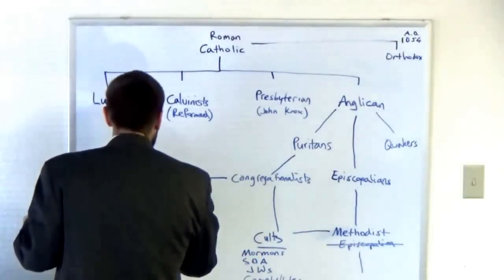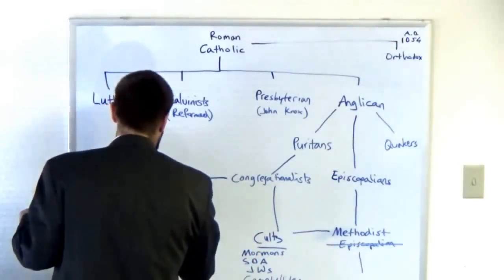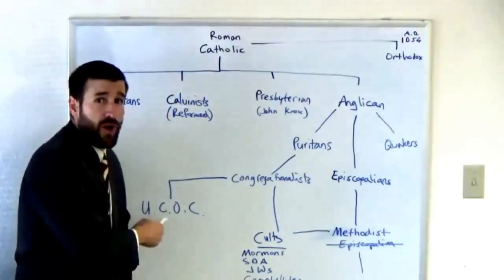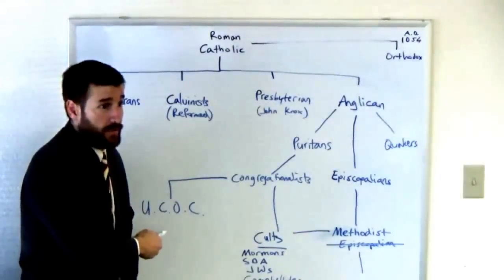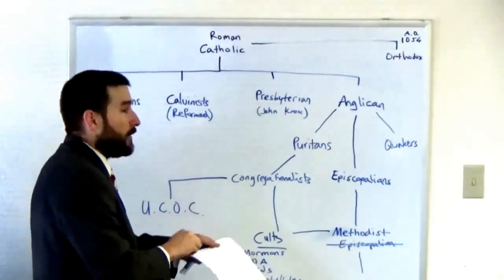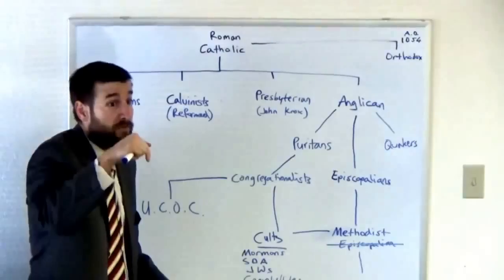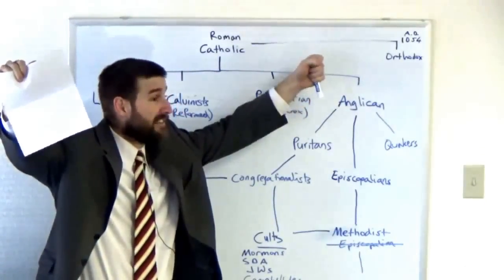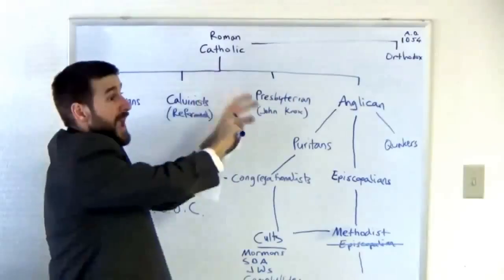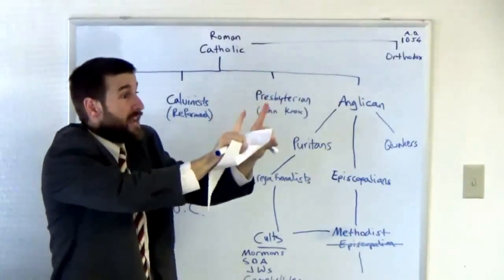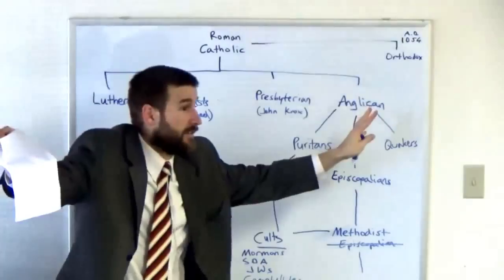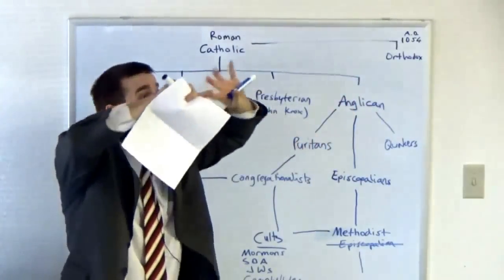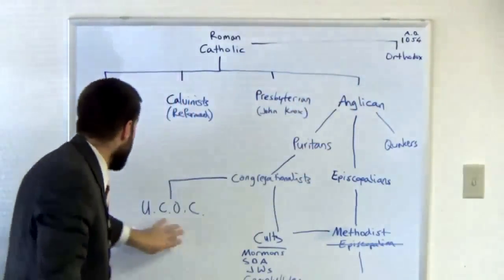Then you've got over here the Congregationalists merged, or I'm sorry evolved into what today we know as the United Church of Christ. Don't confuse the Church of Christ with the United Church of Christ. United Church of Christ is Obama's denomination. The United Church of Christ here in Phoenix has a big picture on the outside, a banner that literally has a picture of a man and a woman, two men and two women saying it's all fine. It says we're on the side of love and has a rainbow flag.